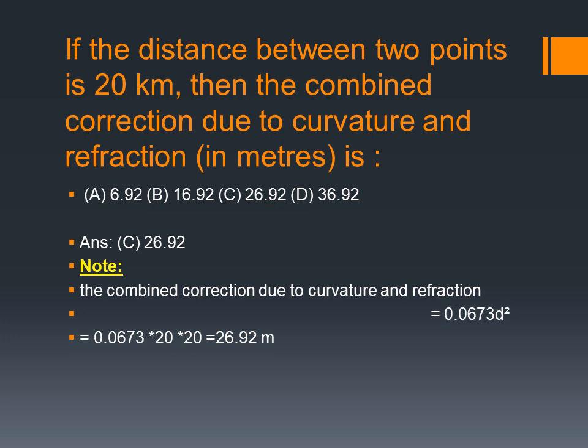D² here means the distance squared in kilometers. Applying the formula with D equal to 20 km, our answer comes out to approximately 1 meter.